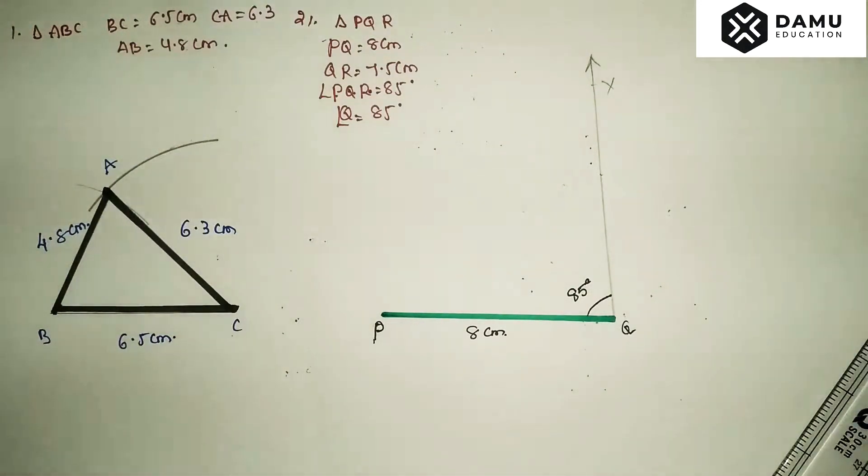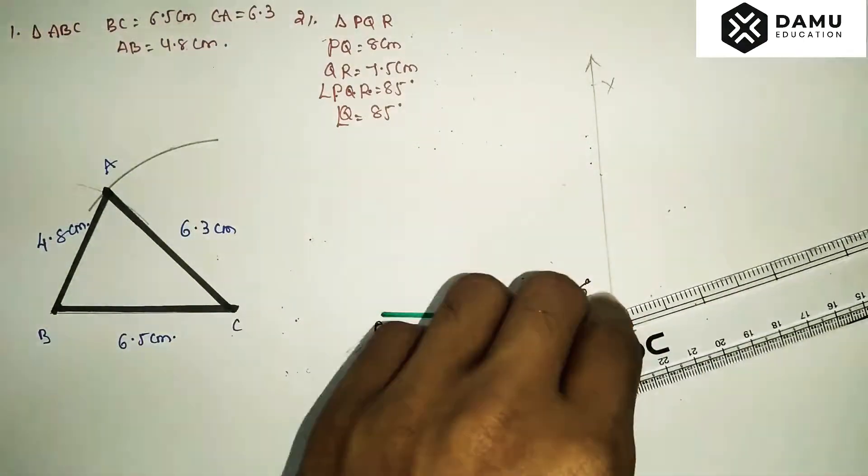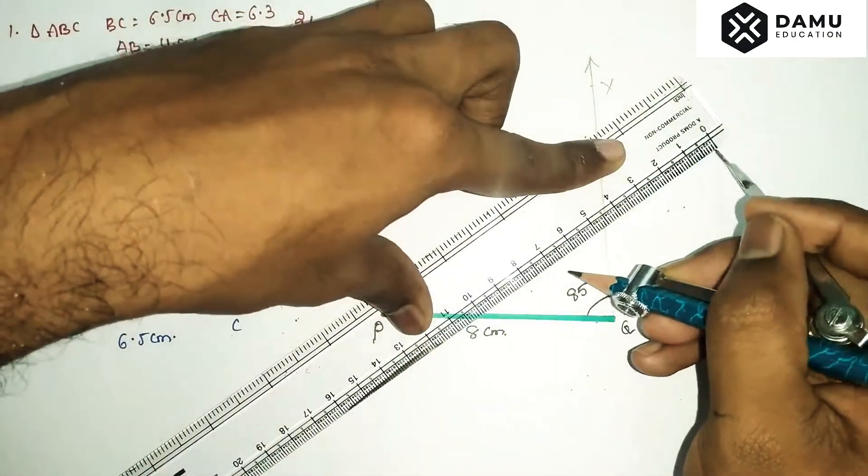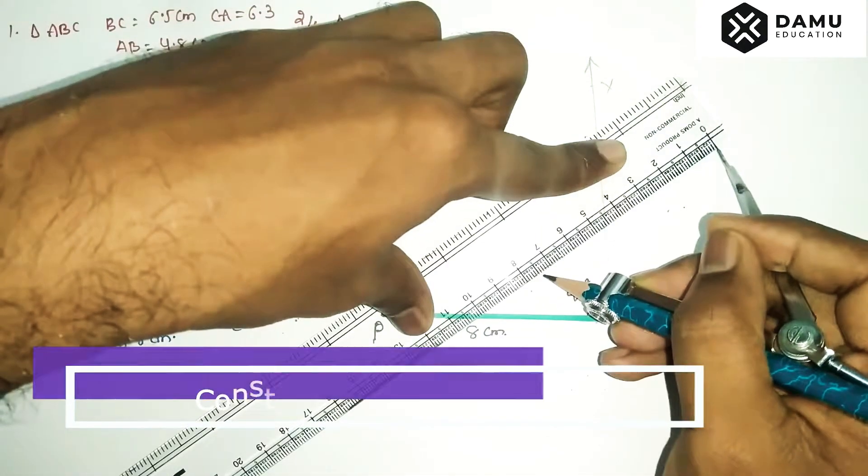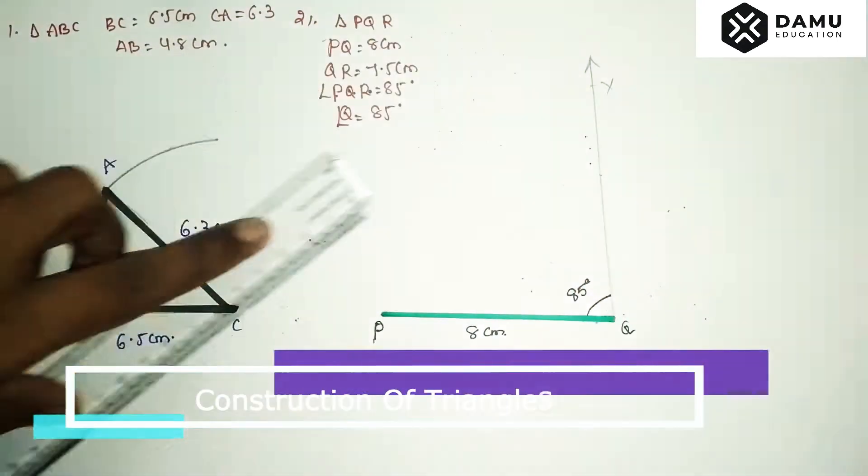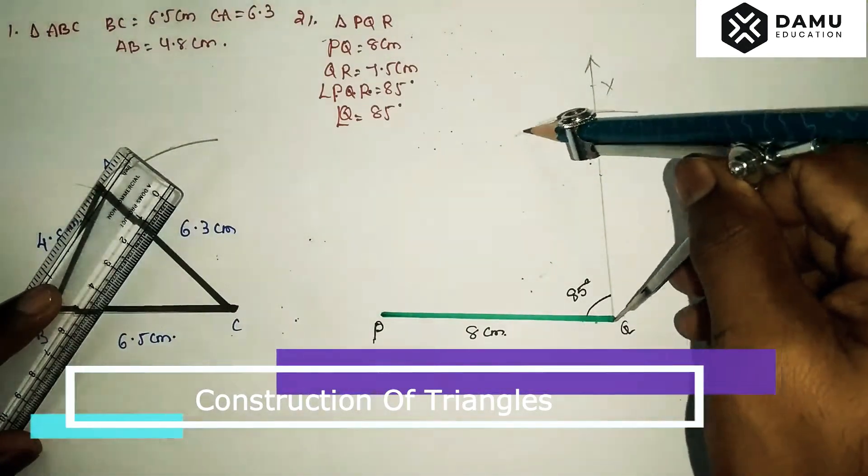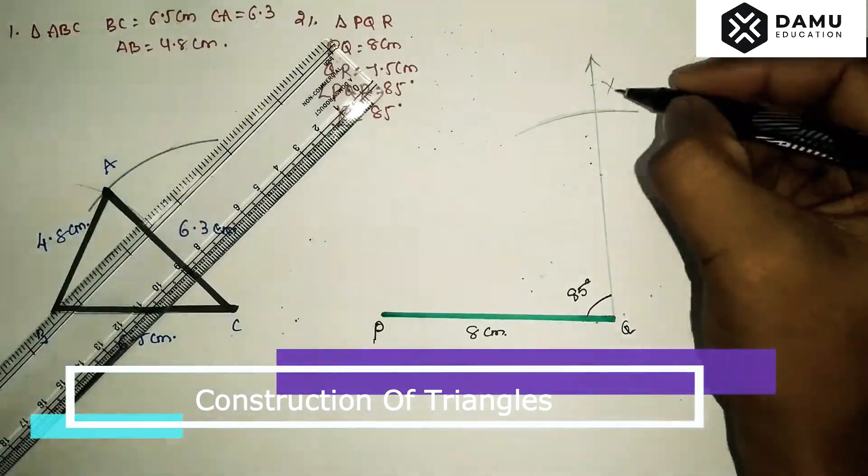They have given QR as 7.5 cm. Take your compass and measure 7.5 cm. With center Q, draw one arc which needs to coincide with QX arc, then locate that point as R.